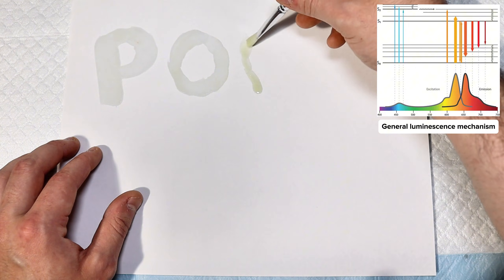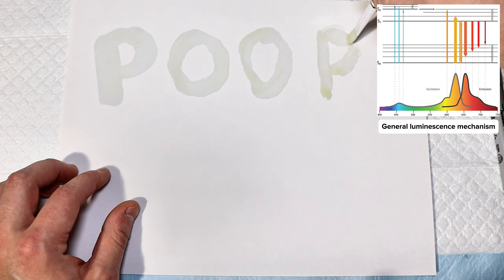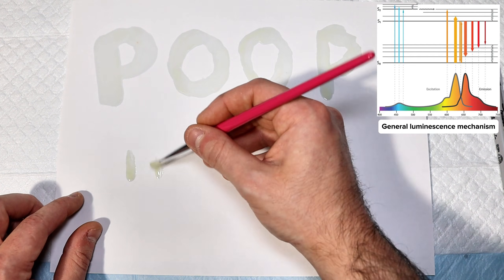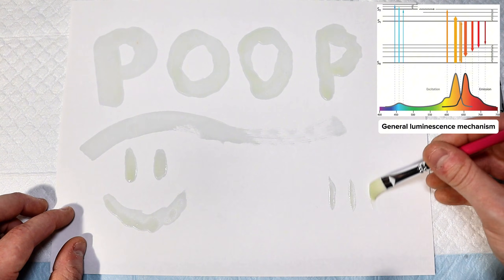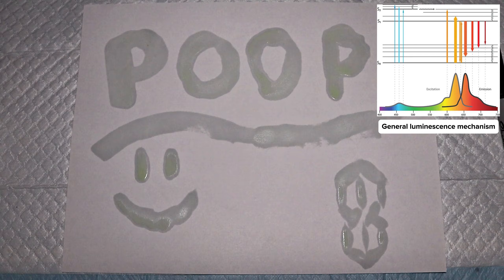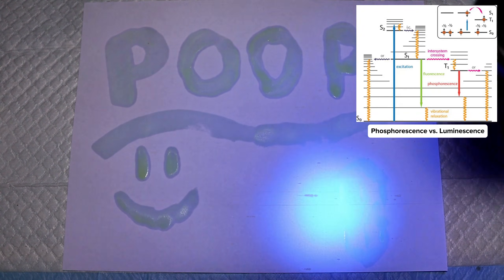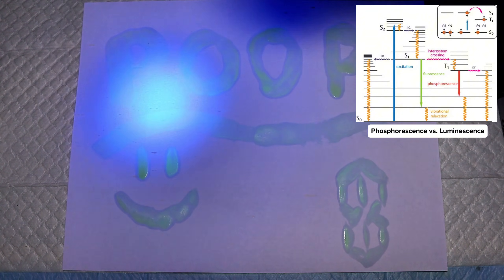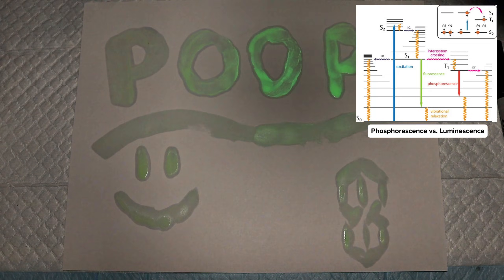In both cases, luminescence and phosphorescence occur when an electron absorbs a photon and becomes excited from the ground state to a higher energy level. This electron then relaxes back down to the ground state along with the re-emission of a new photon with slightly lower energy and therefore a longer wavelength than the incident photon. In the case of luminescence, this excitation and relaxation occurs only between the ground state and one specific excited state.